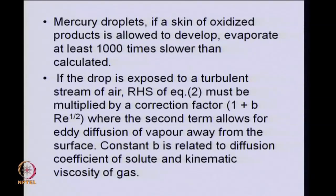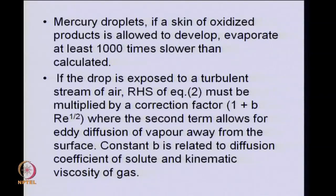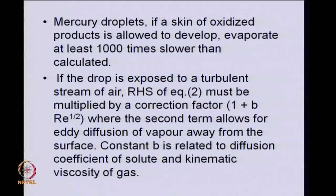Mercury is volatile and also poisonous, so it is common advice in laboratories that if you spill mercury, never use a vacuum pump to clean up the spilled mercury — applying suction will cause mercury to evaporate and that is dangerous. The evaporation of mercury can also be retarded by the presence of a skin of oxidized products. This may remind you of the unreacted-core or shrinking-core model for gas-solid reactions — the oxidation product here offers a similar resistance as the ash layer in that model. For mercury droplets, evaporation could be slowed down by almost three orders of magnitude.